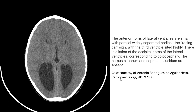This is the case of a CT head scan. The anterior horn of the lateral ventricle is small with parallel widely separated bodies, demonstrating the racing car sign. With a serpentine calcified iron. There is a variation of the occipital horn of the lateral ventricle corresponding to colpocephaly, with the corpus callosum and septum pellucidum absent.